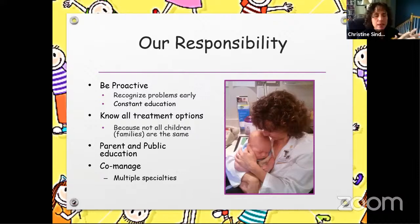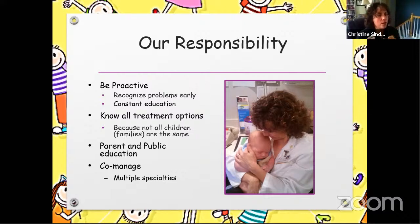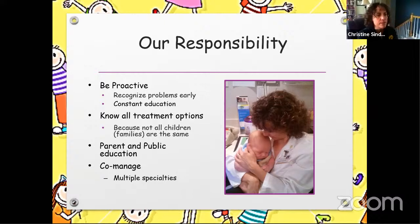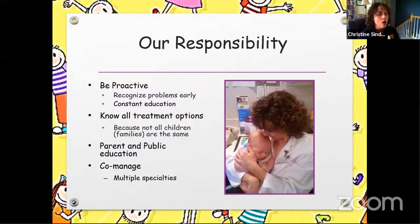Our responsibility for babies is a little different than it is for adults. We have to recognize problems early and we have to constantly educate ourselves and others about pediatric problems — and we have to correct them early. If we do not correct these problems early, we don't get a do-over in 10 or 20 years. We have to know all our treatment options because not all families are the same. We also have to co-manage with other specialties like endocrinology, neurology, or plastics in order to correct the baby's problems.